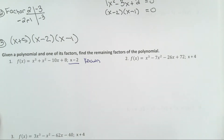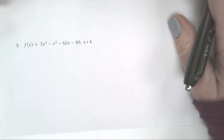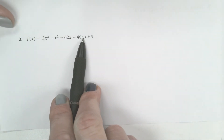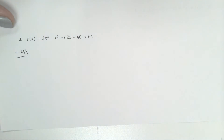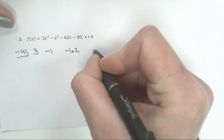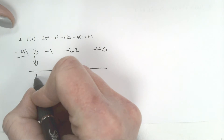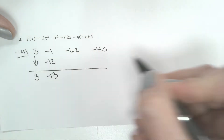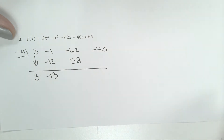Down here in this section we have more of the same. You can check back on problems 1 and 2 later. I'm going to jump down and do problem 3. If I know that x plus 4 is a factor, that means I'm going to use negative 4 as my number for synthetic division. I don't need any filler zeros, so I just use my coefficients. Bring down your first term, then multiply — negative 4 times 3 is negative 12 — add, multiply, and add.